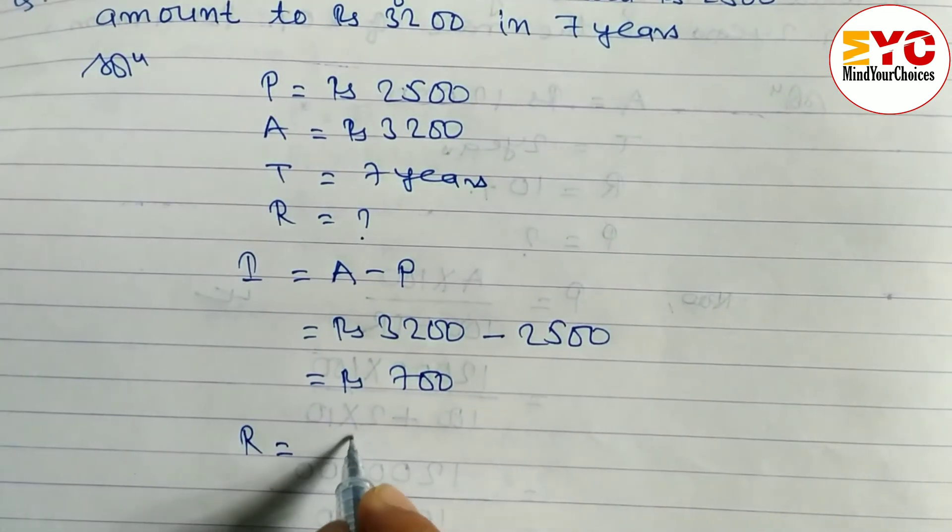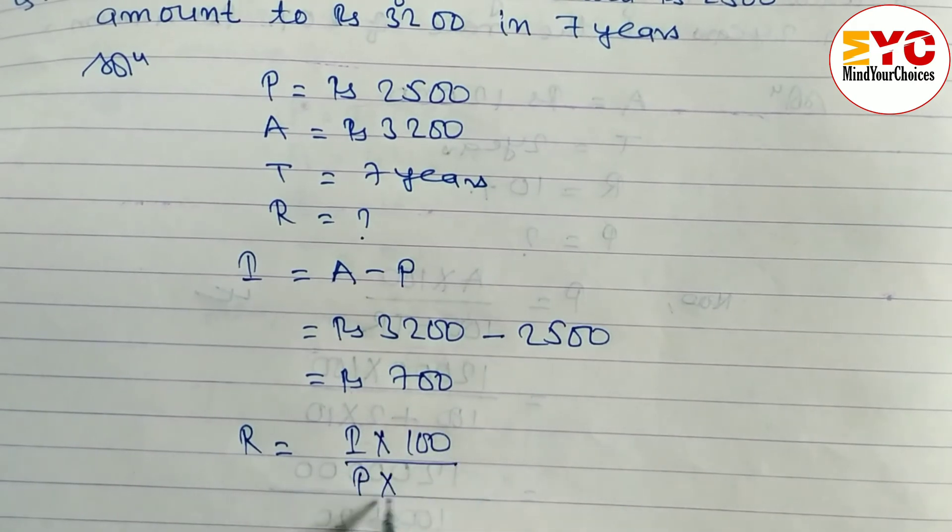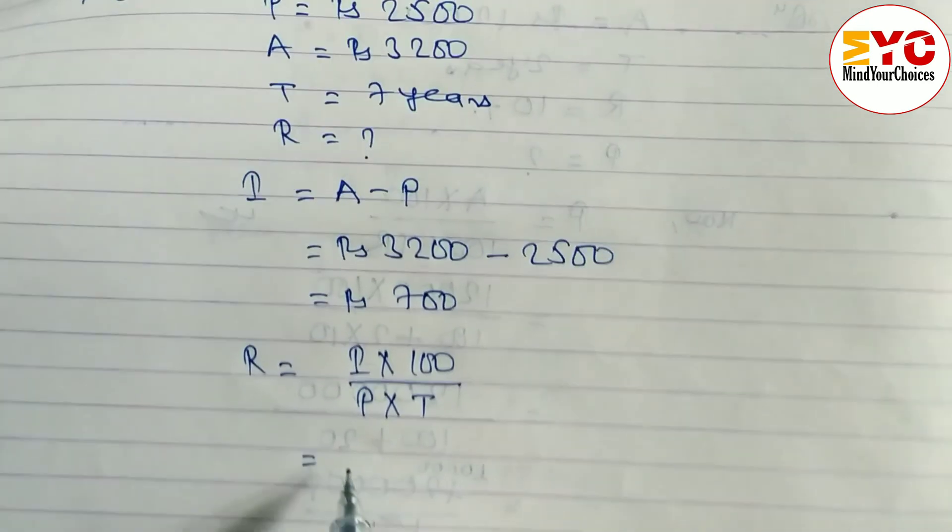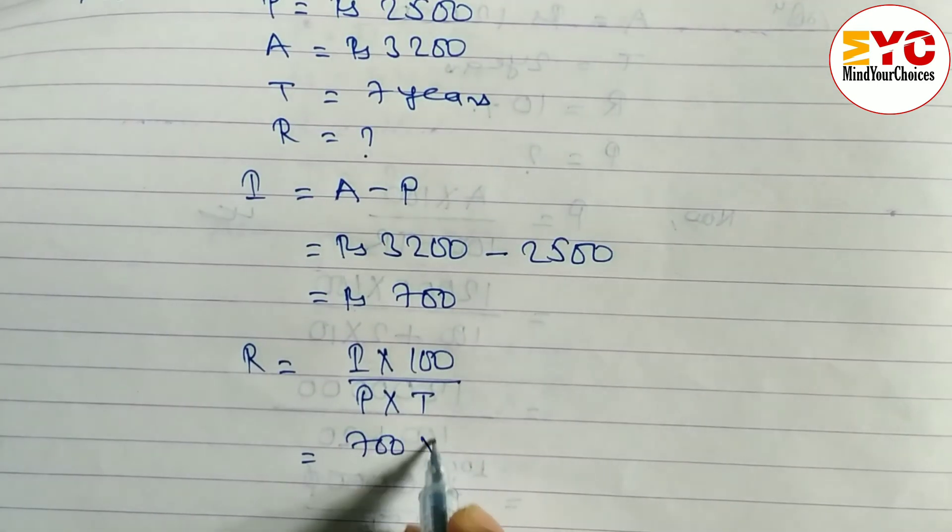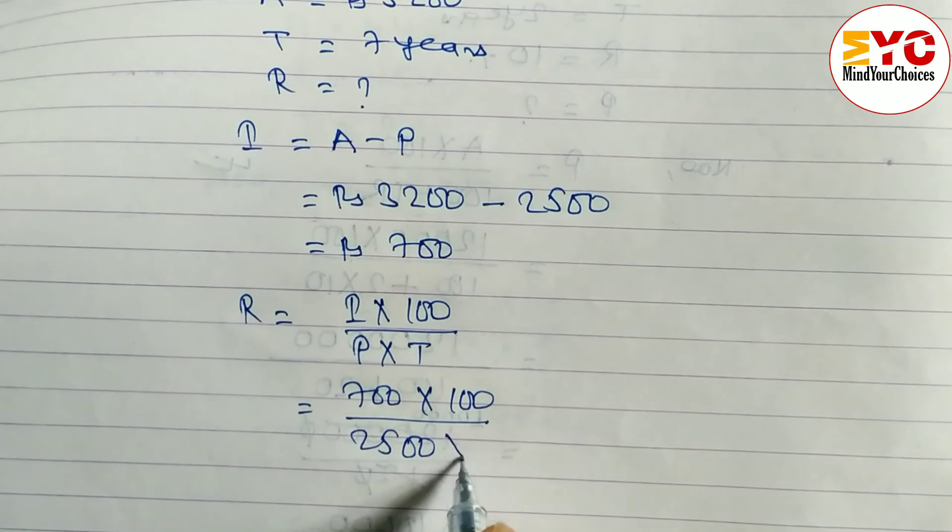After this, we have to find out rate. Rate formula is I in 200 by P into T. So I is here 700, so we have to write here 700 into 200 by P is equal to how much here? 2500 into T, T is equal to 7.